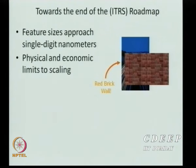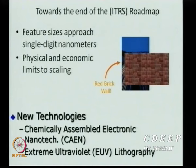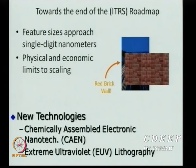As scaling hits physical and economic limits — the 'red brick wall' — new technologies must appear. These include nano-technologies, CAEN (chemically assembled electronic nanotechnologies), and extreme ultraviolet (EUV) lithography. EUV efforts have been ongoing for 8 years worldwide but haven't yet been achieved commercially.